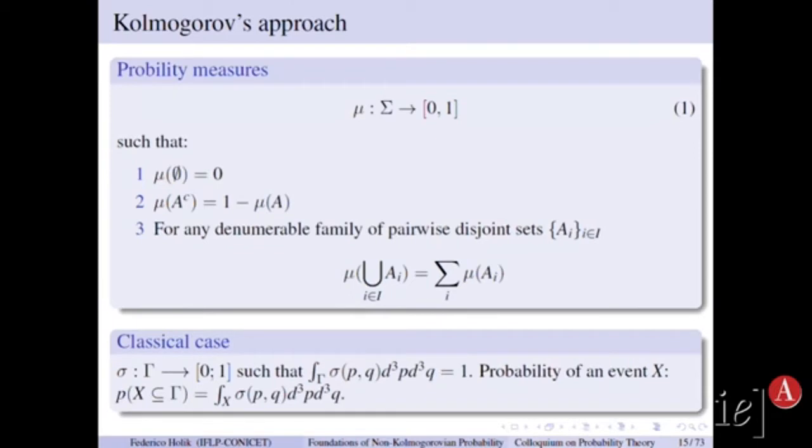So with these axioms, Kolmogorov succeeded in including most of the models that were used in all the applications known by that time. And so this was a rigorous formulation of probability theory in the sense of the problem posed by Hilbert. So this was one of the first solutions.